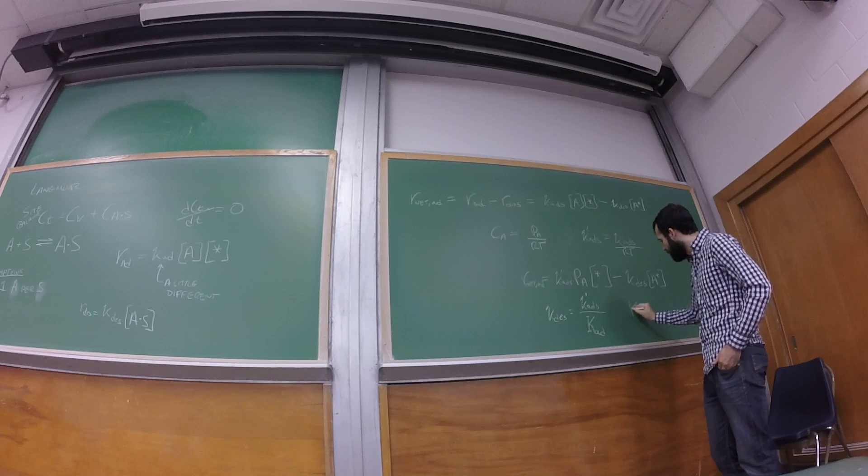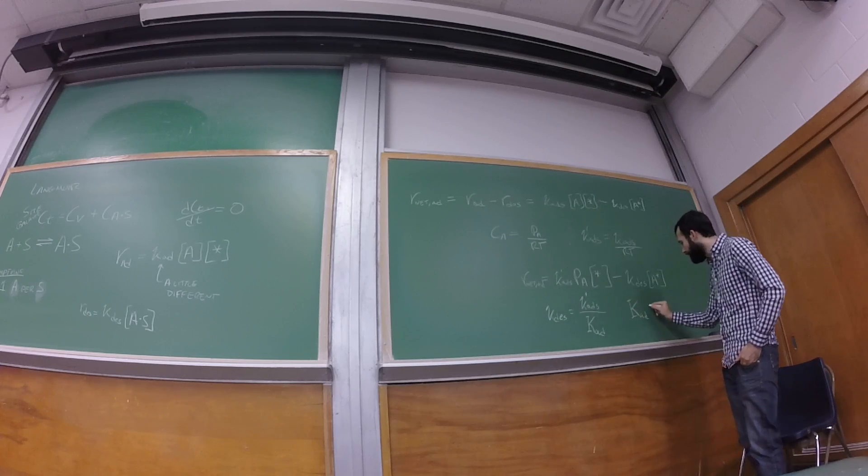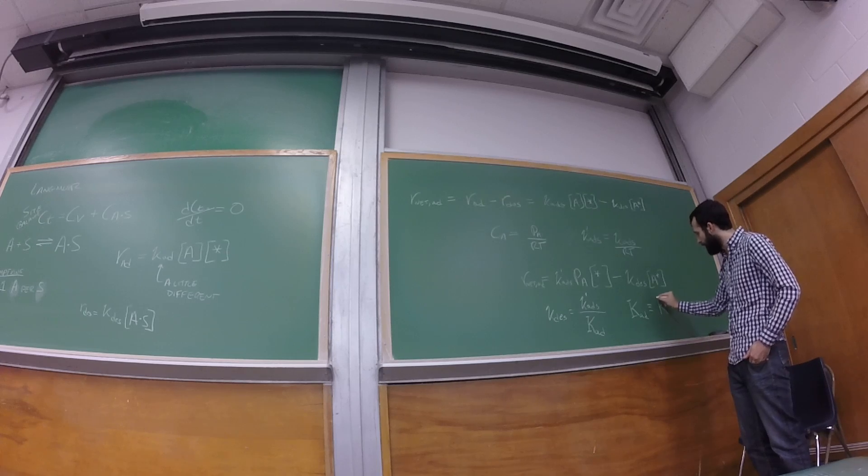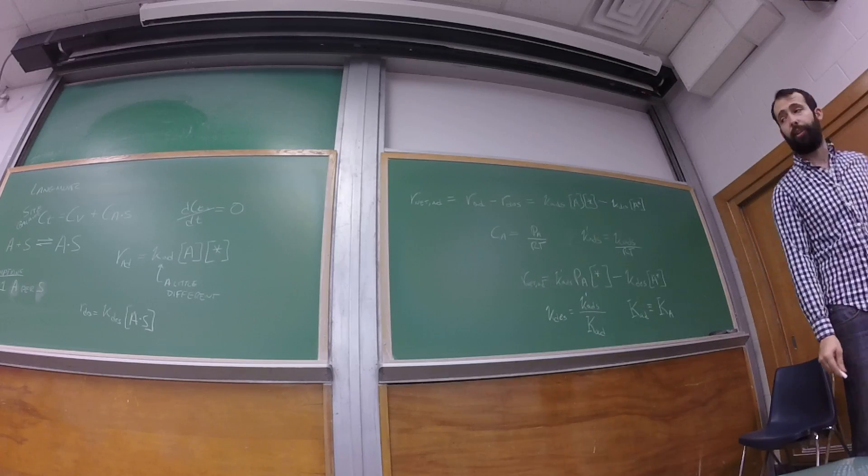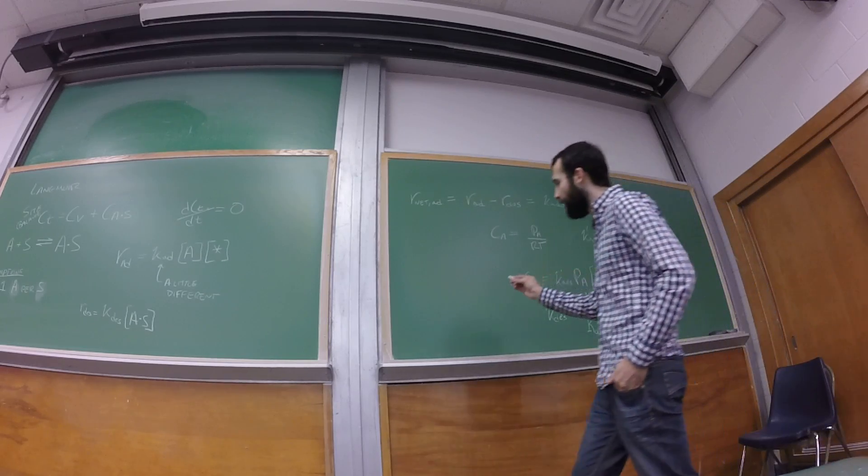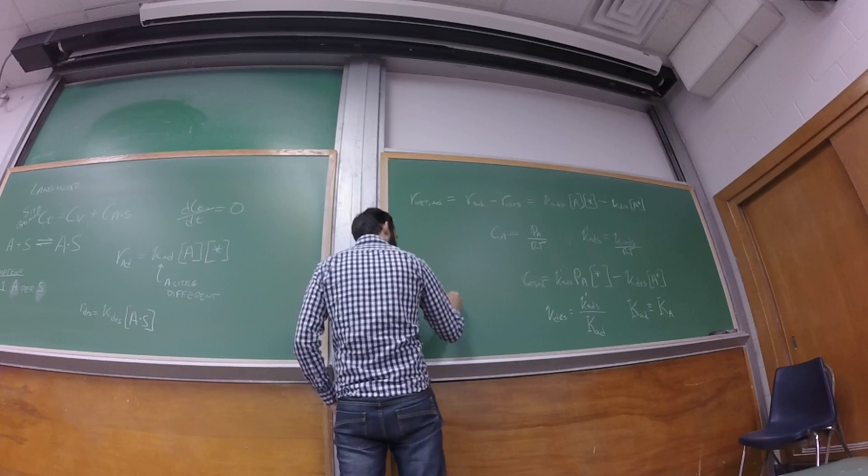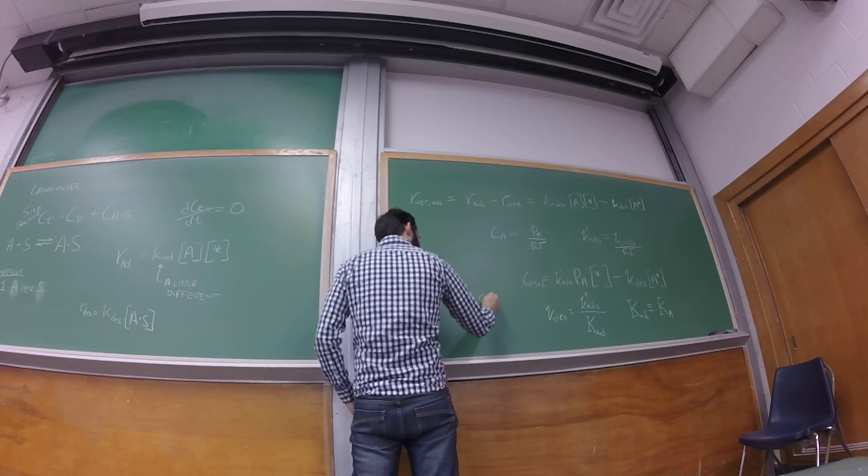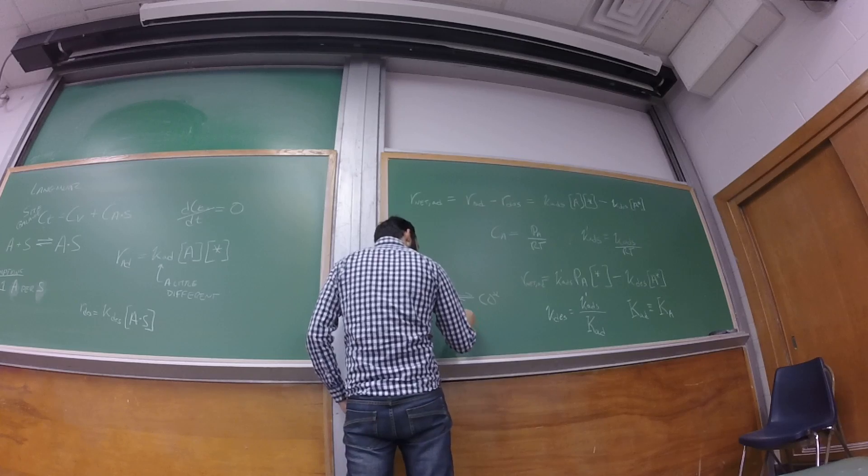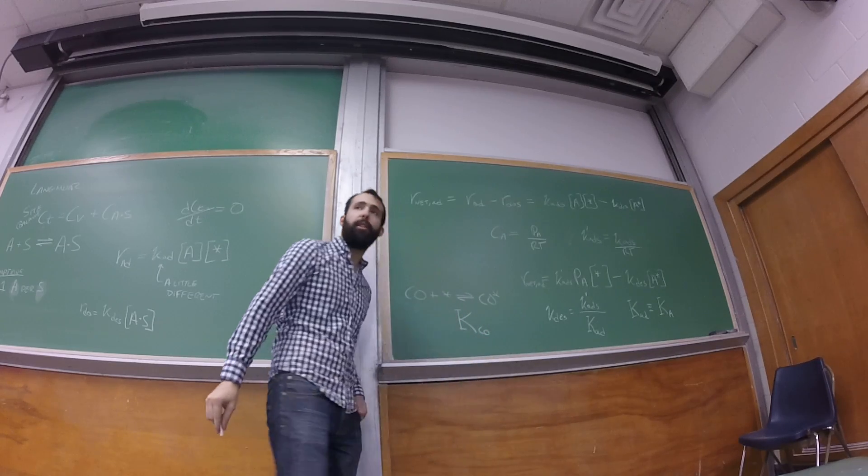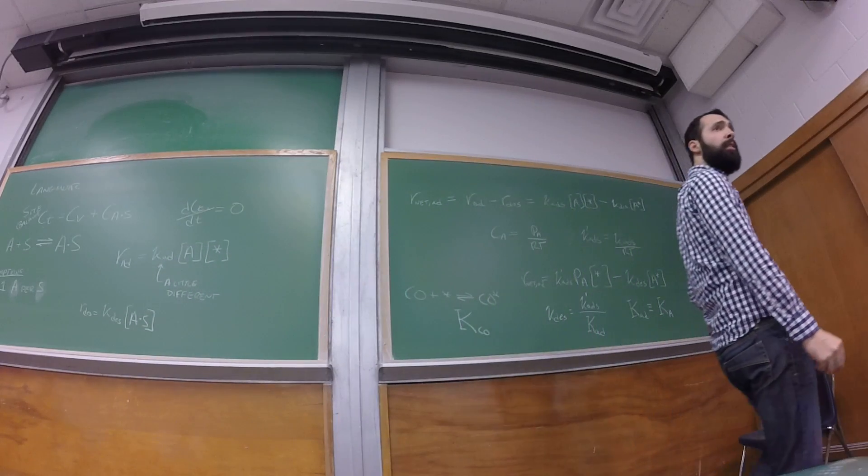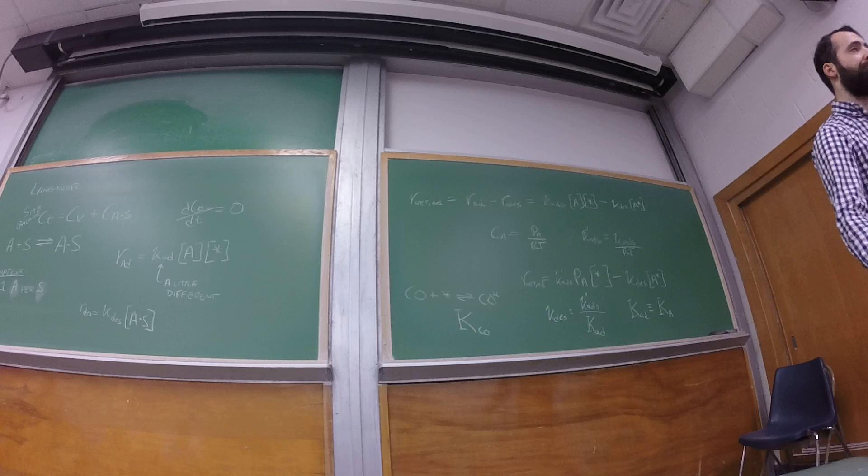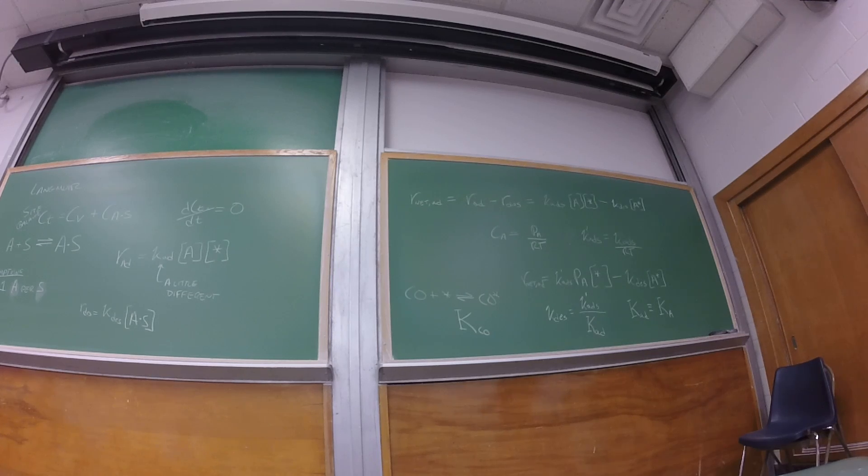And k adsorbs is often written as simply a big K and then the species that you're referring to. For example, if you have CO adsorption, you would most often show that equilibrium constant as a large K_CO. Do you want to see it in that form like he does in the book? I don't care. As long as what you have down there is correct, you're not going to lose points.